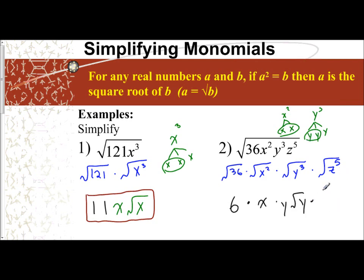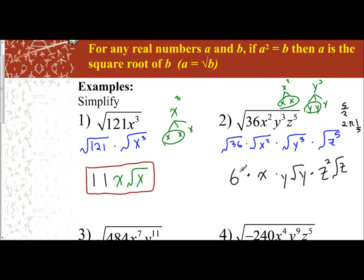The shortcut is: look at your exponent. For z to the fifth, divide 5 by 2 — it goes in there twice. You're going to have one pair of z's, two pairs of z's, which takes care of four of them, with one remaining inside. When you take 5 and divide by 2, you get 2 with a remainder of 1, so 1 z remains inside. Putting it all together: on the outside I have 6, x, y, and z squared. On the inside, I have the square root of y and z. That is my final answer.